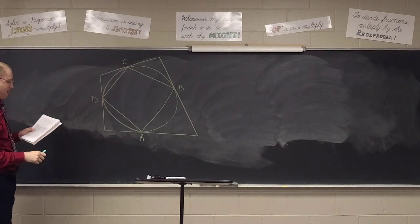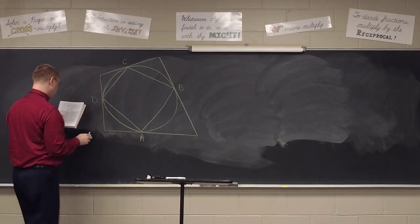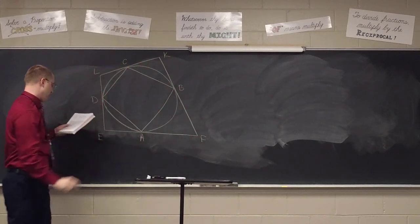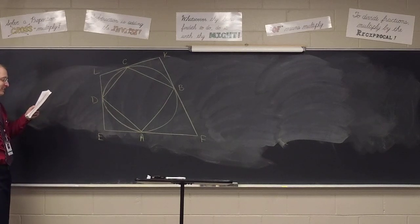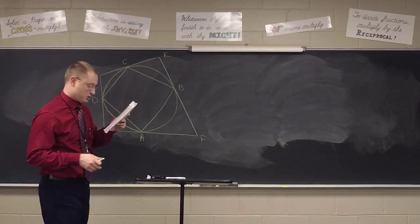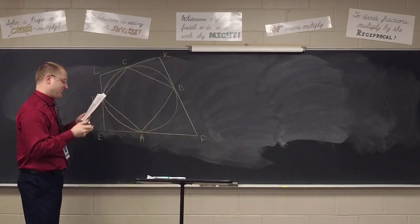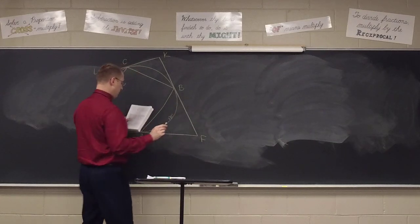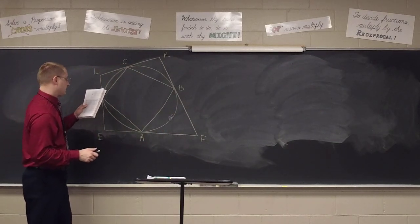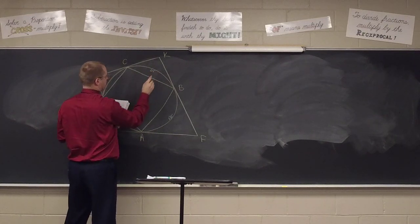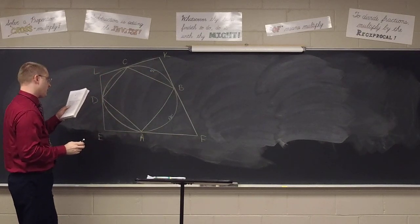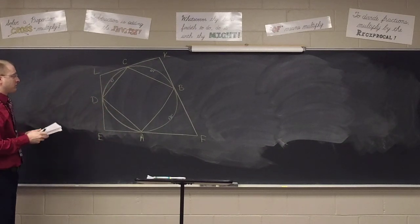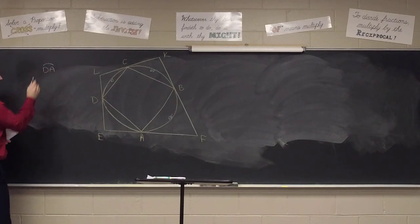We have a circumscribed quadrilateral EFKL. We are told that arc AB is 130 degrees, arc BC is 64 degrees, arc CD is 80 degrees. We're supposed to find arc DA first. At your seats, go ahead and find the missing arc.